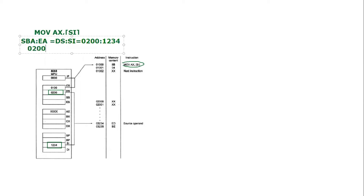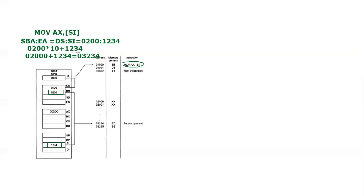Applying the formula: segment base address 0200 is multiplied by 10, giving 02000, plus SI value 1234. Adding them: 02000 plus 1234 equals 03234. So the physical address is 03234. This address is pointed to by the source operand SI, and the value at this memory location should be moved inside the AX register. Looking at the memory, the value stored there is ED, at the next address BE.